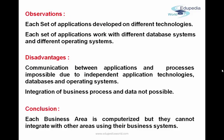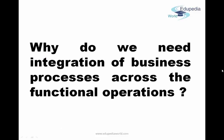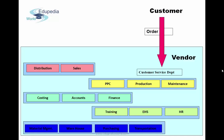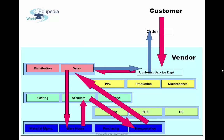Each set of applications is developed on different technologies, works with different database systems, and different operating systems. Communication between departments becomes impossible due to lack of integration. For example, when a customer places an order and then inquires about its status, the customer service department has to run around different departments to gather data — whether the order is in manufacturing, transported, delivered, or about to be delivered. Without integration, it's very difficult to give the right status to the customer.